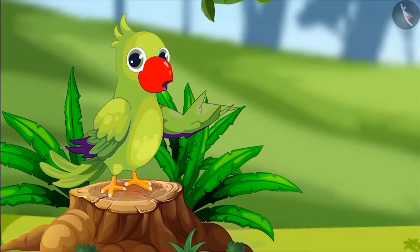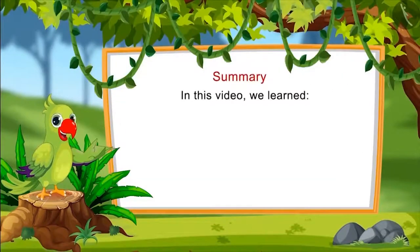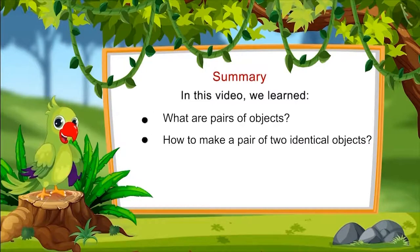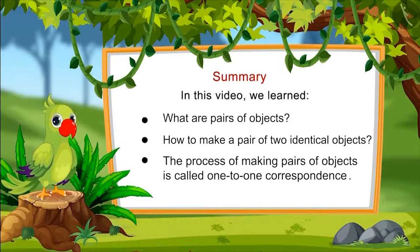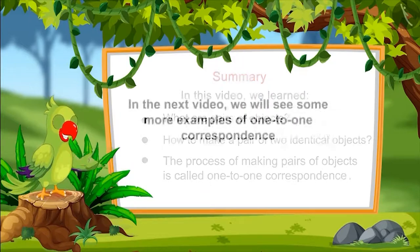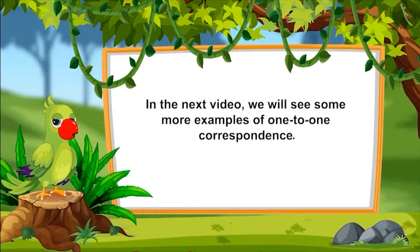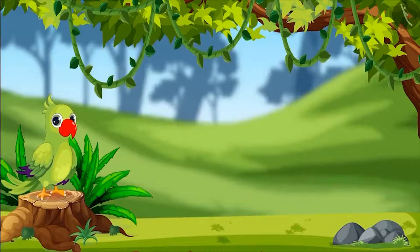So children, like Chotu, can you think of more examples of pairs? That's all for today. In this video we learned what are pairs of objects, how to make a pair of two identical objects, and the process of making pairs of objects is called one-to-one correspondence. In the next video, we will see some more examples of one-to-one correspondence. Bye friends!